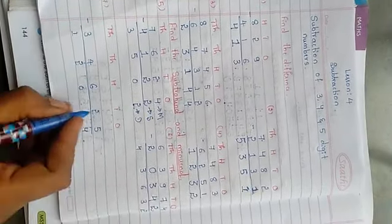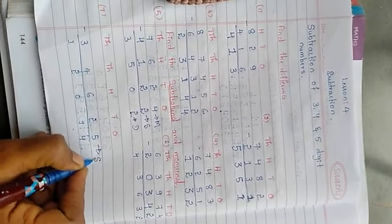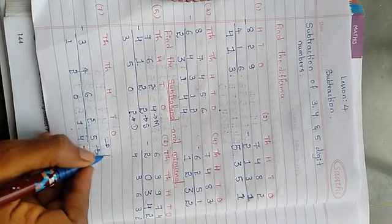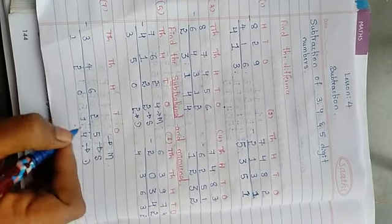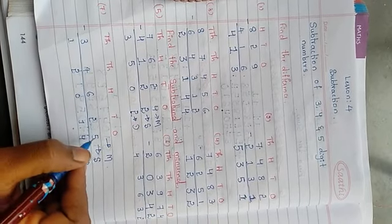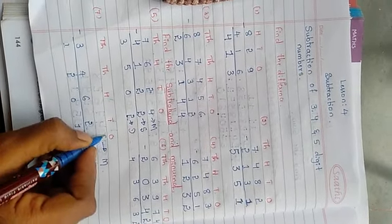In the third one, they have given subtrahend, they have given difference, you have to find minuend. The same way, they have given both. Just do addition and keep the answer. 5 plus 4 is 9.